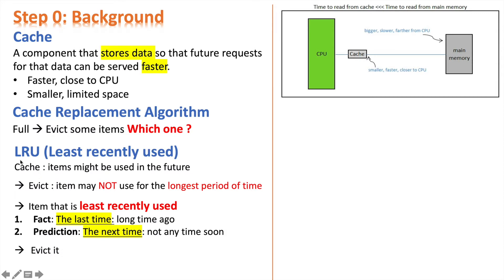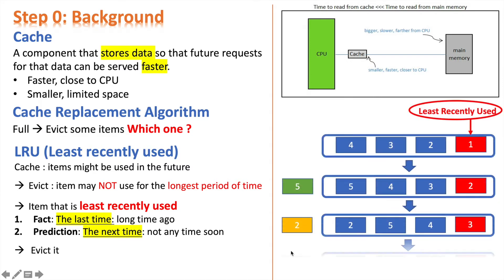Since reading from cache is much faster, we'd like to keep those items that we may use over and over again. In other words, we'd like to get rid of the items that we may not use for the longest period of time. This is where LRU — Least Recently Used — comes in. It's a prediction based on the fact that if the last time we accessed an item was a long time ago, then we won't access it any time soon, so we evict it. Let's use an example to see how LRU works.